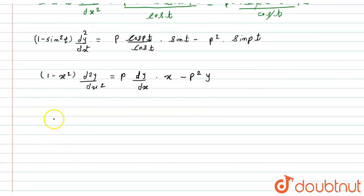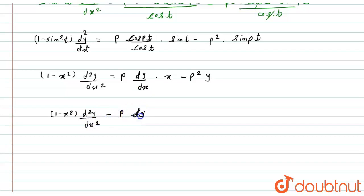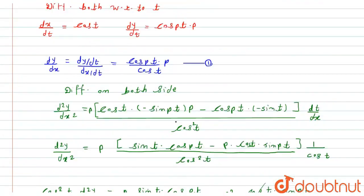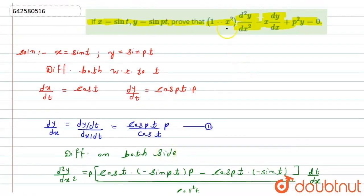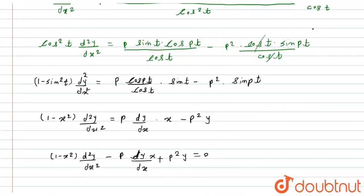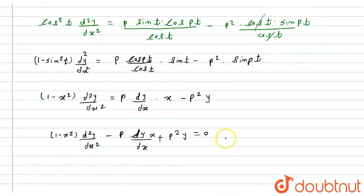Taking all terms to one side, the expression becomes: (1 - x²)·d²y/dx² minus x·dy/dx plus p²·y equals 0. And this is exactly what we had to prove. Hence proved. I hope you will like the solution.